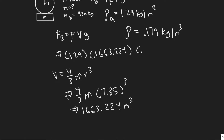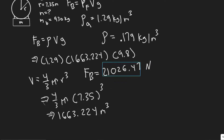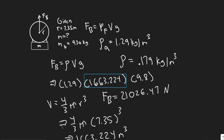Multiplying by the acceleration due to gravity, 9.8 meters per second squared, we get: 1663.224 times 9.8 times 1.29. That gives us a buoyancy force of 21,026.47 Newtons. This is the force applied upwards.